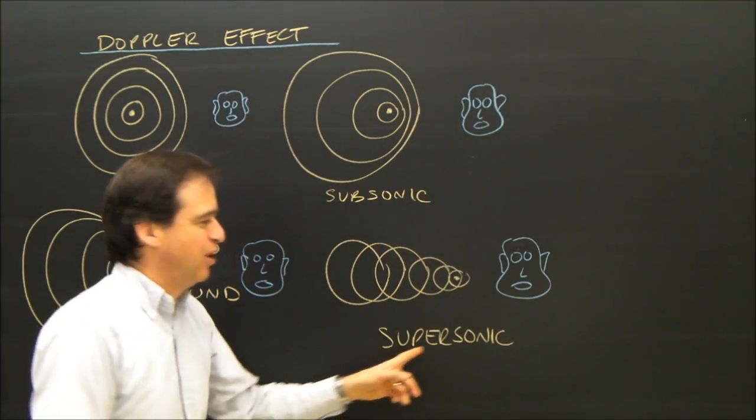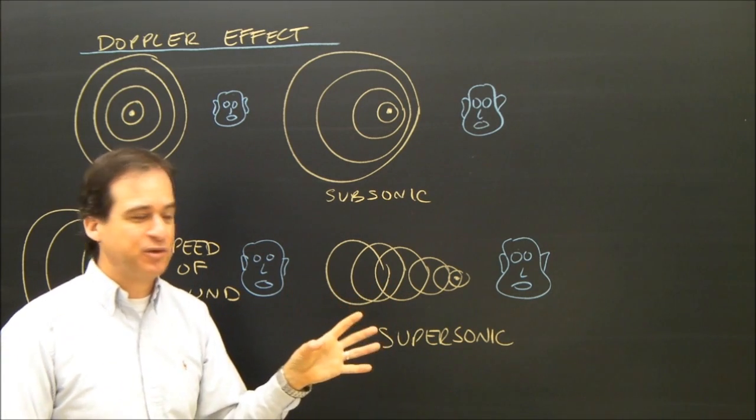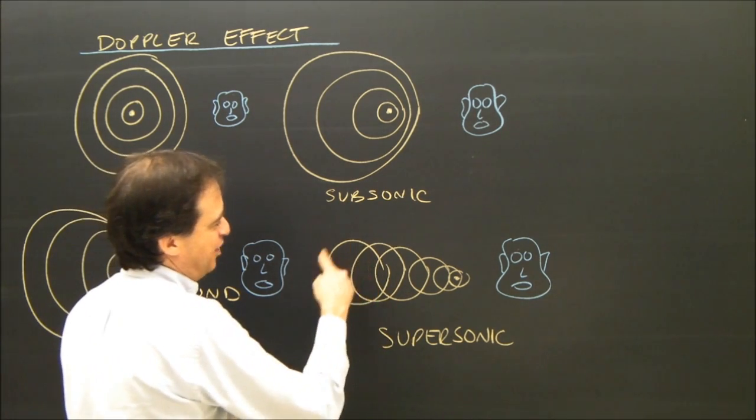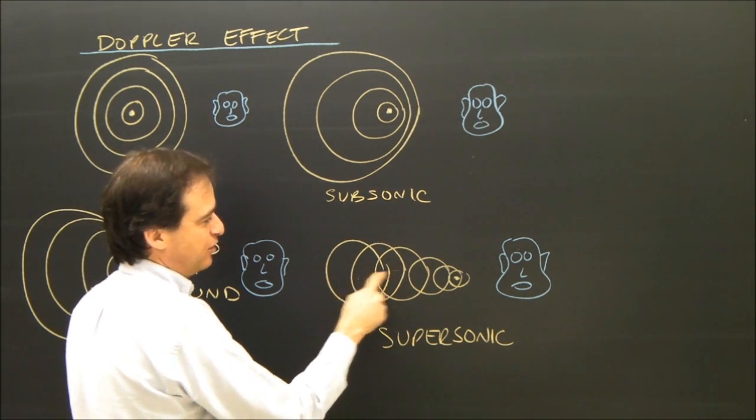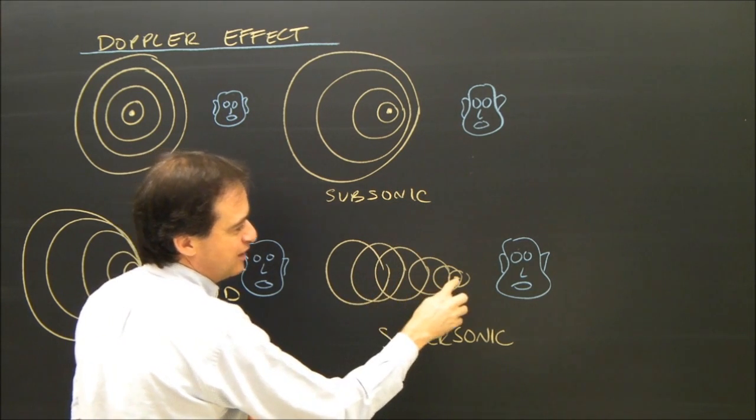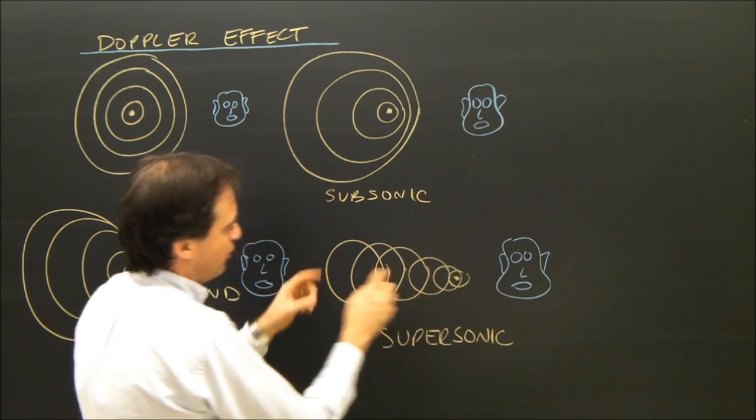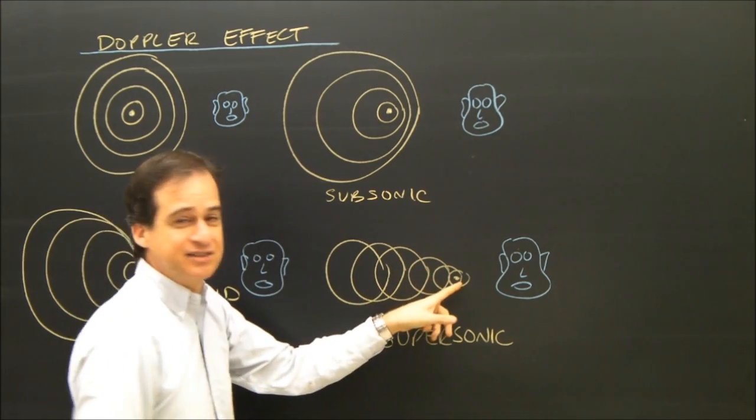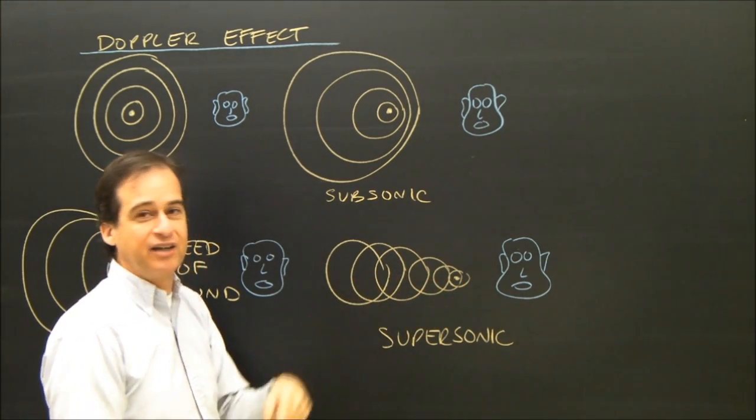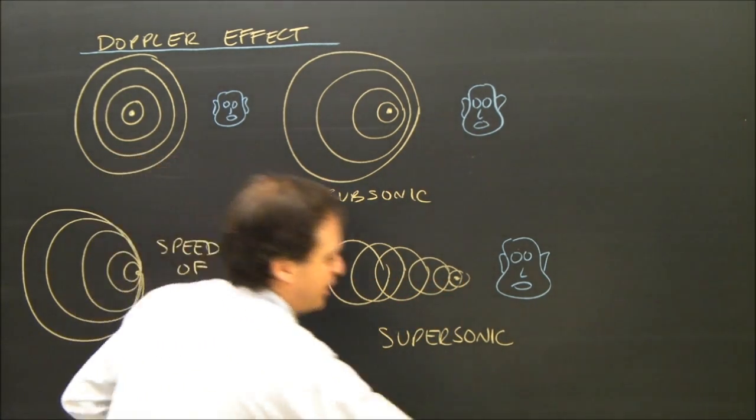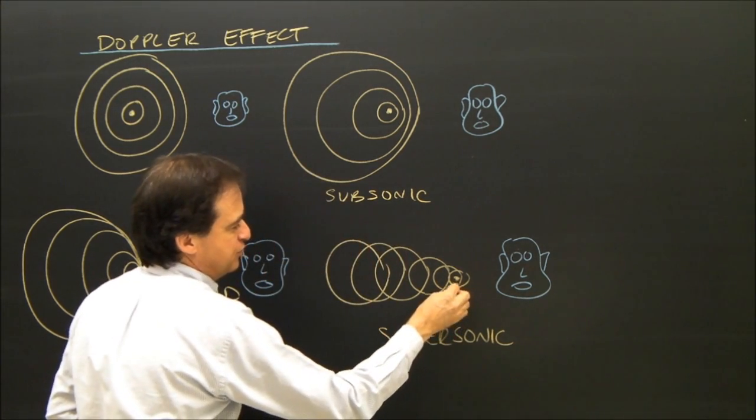If the object is traveling faster than the speed of sound, we have a similar thing happening, except this sound wave was made when the object was here. This one was made when the object was here. The object's all the way over here, and this sound wave is not radiating out as fast as this thing is moving. So it never catches up to this person.